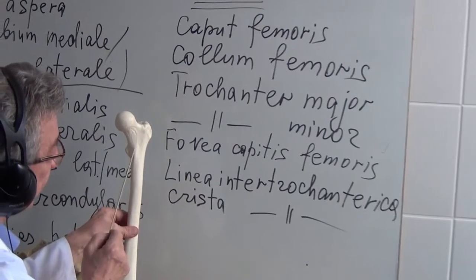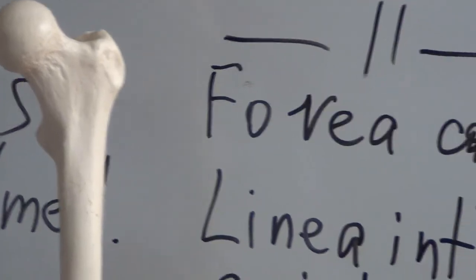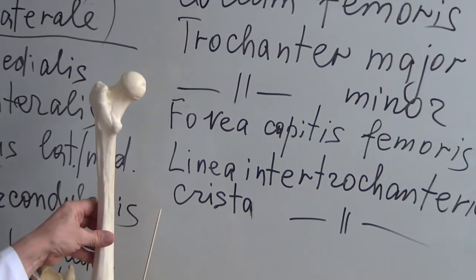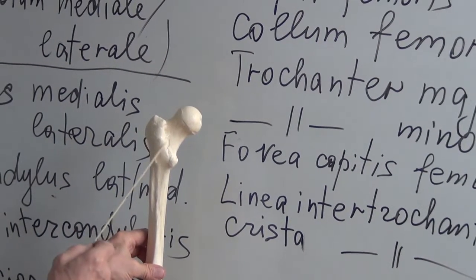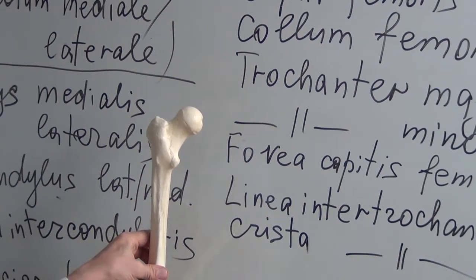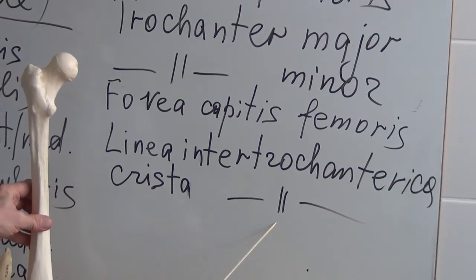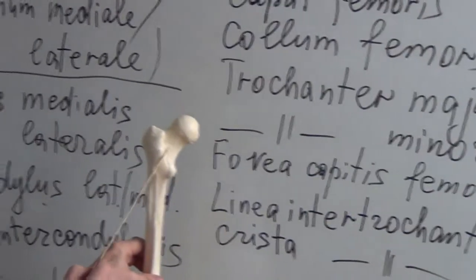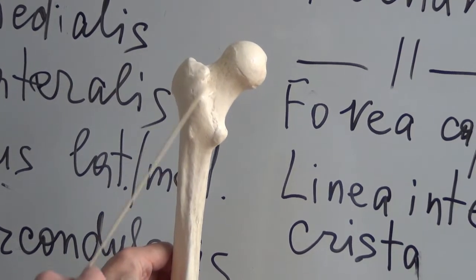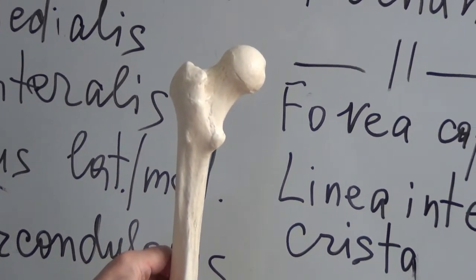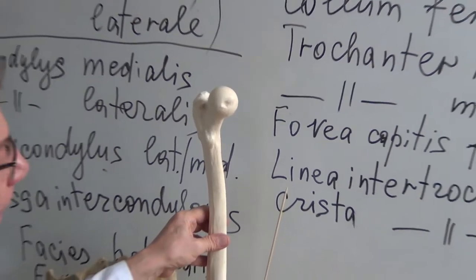This is the linea intertrochanterica. This is the anterior surface of the femur. Turning it to the back side, this is the posterior surface of the femur. On the posterior surface you can find the crista intertrochanterica. All these structures are found on the proximal epiphysis.